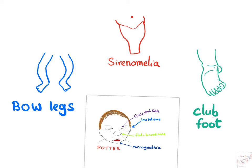Among the limb abnormalities there are bow legs, also known as genu varum; sirenomelia, which is fused legs also known as mermaid legs; club foot, which is kind of inverted; and other abnormalities of the extremities. Very high yield.